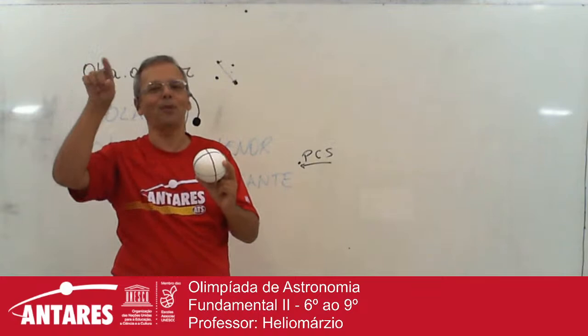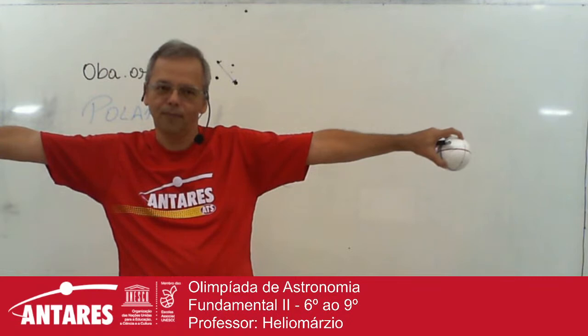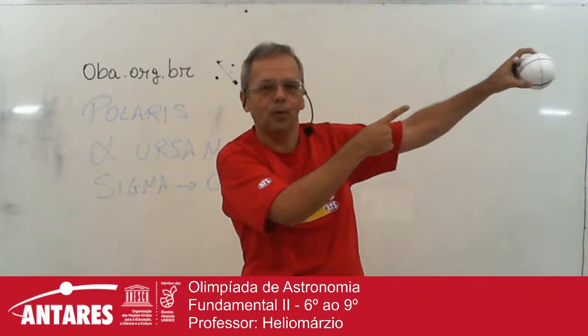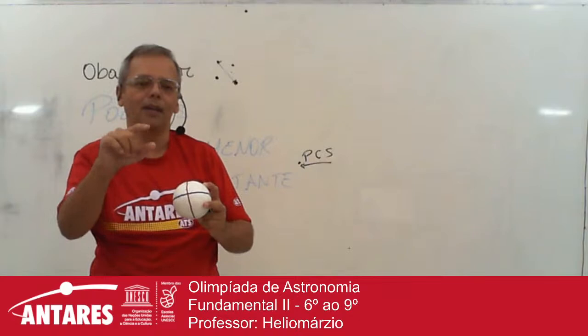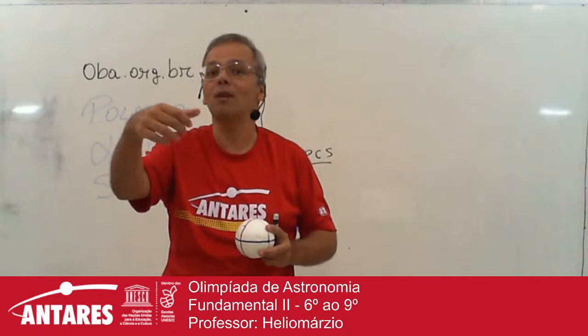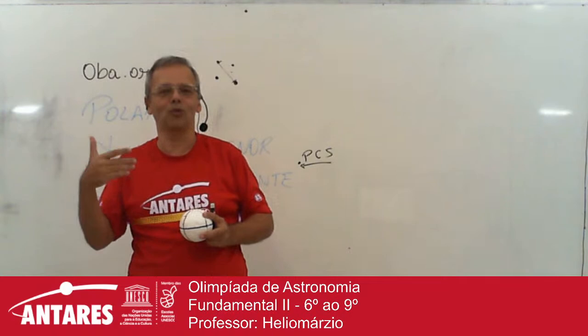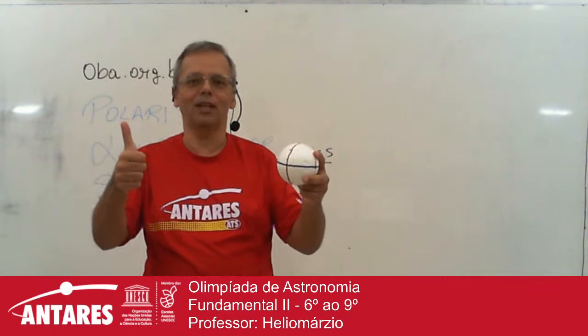E se eu estiver no Equador? No Equador, Polaris e Sigma do oitante ficam exatamente em cima do horizonte. Se você dá um passo chegando para o Norte, Polaris subiu, porque você está acompanhando a curvatura da Terra. A gente precisa ter essa noção de referencial. Nas próximas questões a partir da próxima aula, a gente volta nesse assunto. Preparem mais perguntas para trazer — isso vale a pena. Com base no que a gente viu hoje, pensem em mais perguntas para fazer isso na semana que vem. Grande abraço, tudo de bem, tchau tchau!